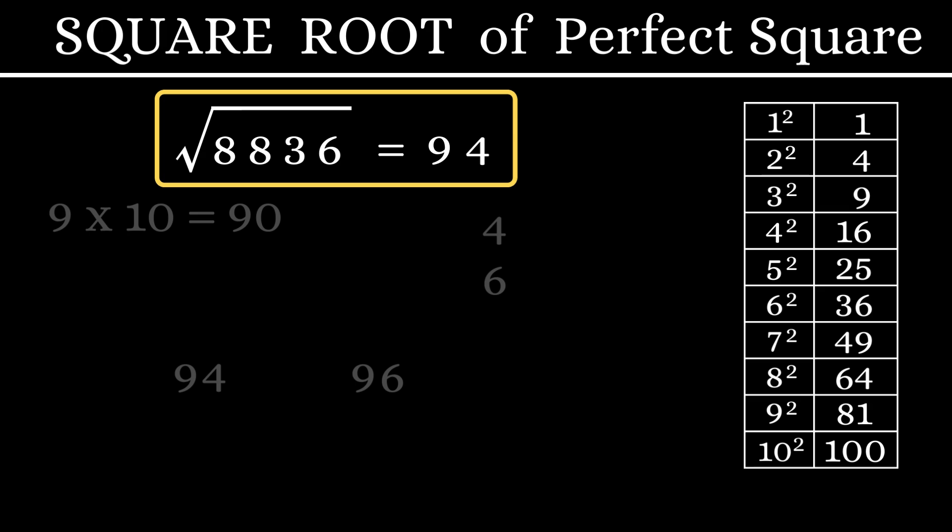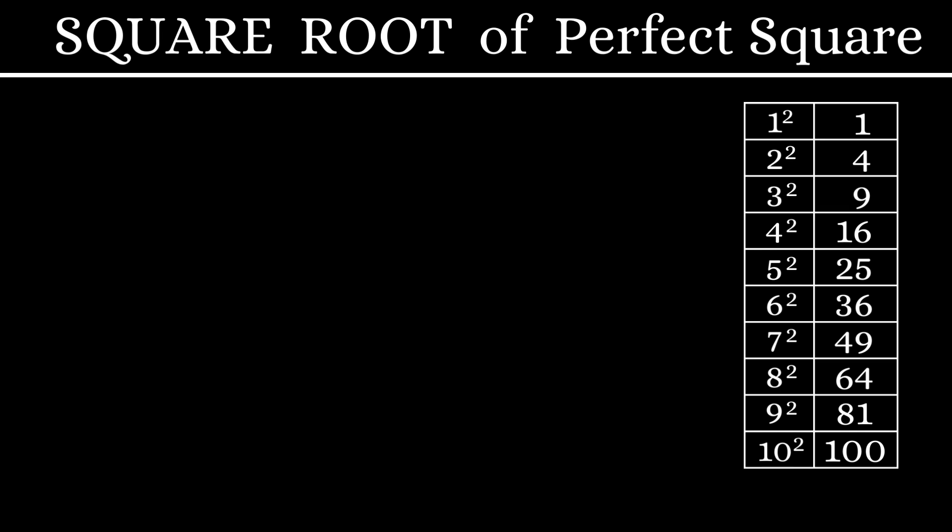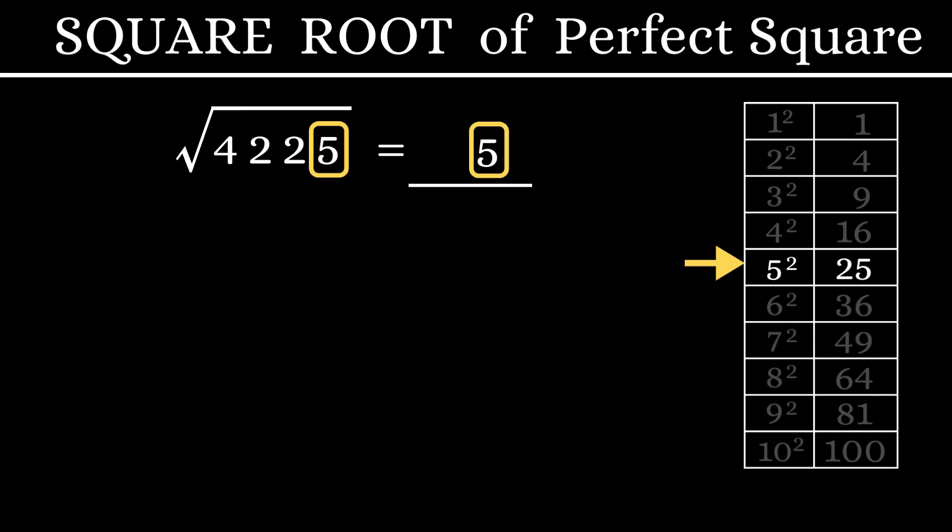Now, let's understand what happens in this case: square root of 4,225. The last digit is 5, which means the units digit of the answer will be only a 5. So, our work is easier.